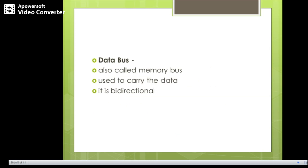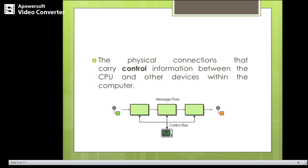The data bus, also called the memory bus, is used to carry data. As the name specifies, the data bus is bidirectional, so data can be exchanged in both directions between devices. The control bus is the physical connection that carries control information between the CPU and other devices within the computer, such as I/O devices or memory.